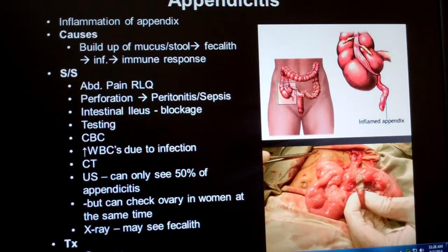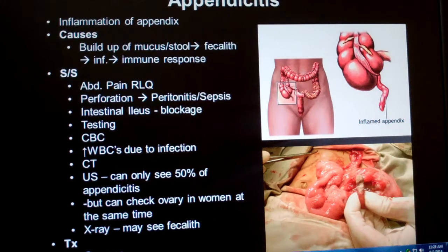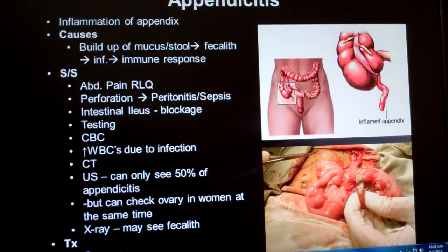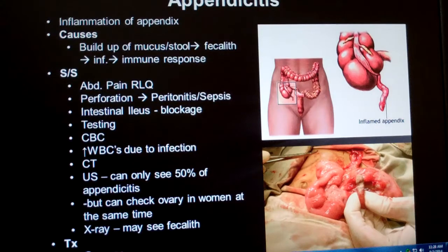The problem with appendicitis is that there are so many other things it could be, but not taking out the appendix and letting it burst is taking a really big risk, so a quarter of them are removed even when they didn't need to be. An inflamed appendix, 50% to 80% of the time, is due to an obstruction — usually a fecalith, a hard ball of compacted feces, or less commonly a gallstone, tumor, or even a bunch of worms.